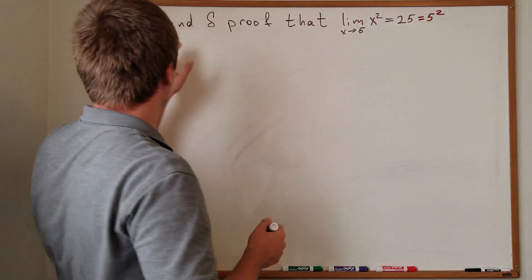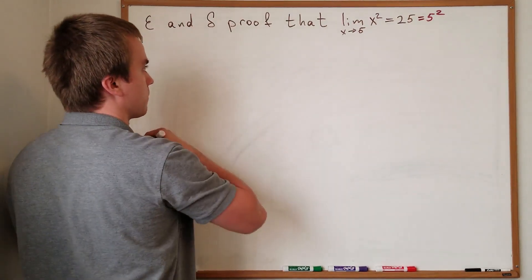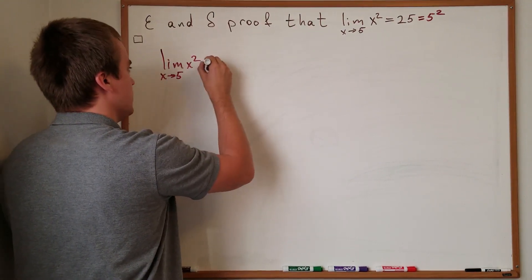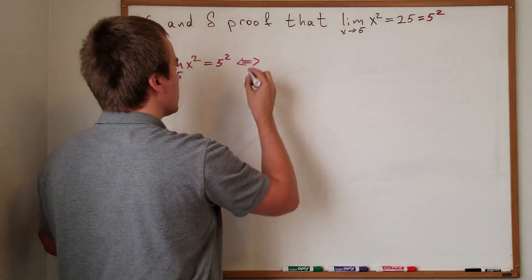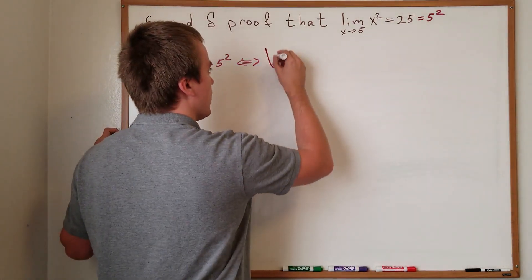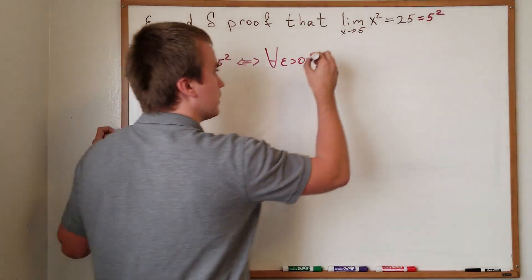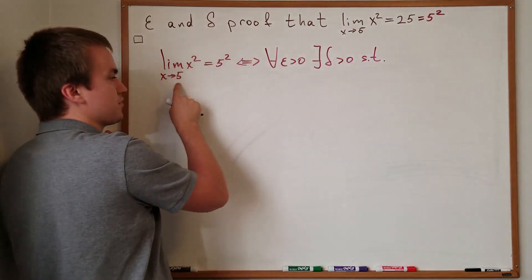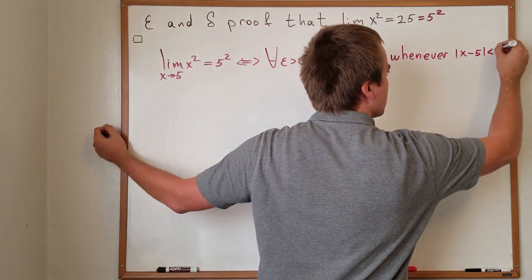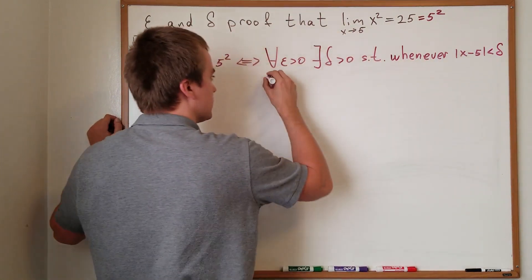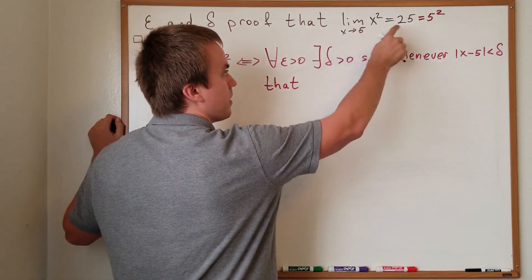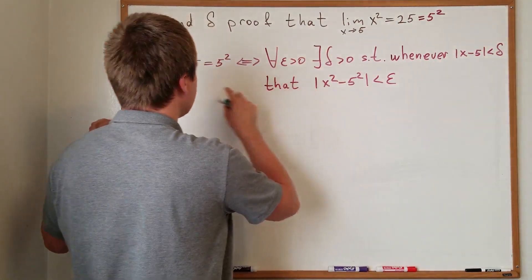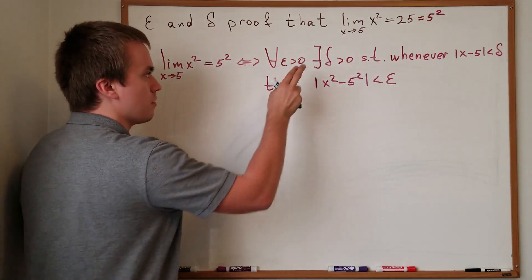If you want to do an epsilon-delta proof, let's first recall the definition. We say that the limit of x squared when x approaches five is equal to five squared if and only if: for any epsilon greater than zero, there exists a delta greater than zero such that whenever the absolute value of x minus five is less than delta, it follows that the absolute value of x squared minus five squared is less than epsilon. We want to show this limit exists and equals five squared using the epsilon-delta definition.